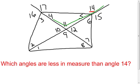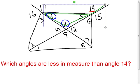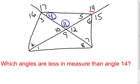I'm going to look at angle 14 as an exterior angle of a triangle — I've highlighted that triangle. I'm going to look for remote interior angles of angle 14, because those are going to have to be smaller in measure than the exterior angle. Angle 11 is a remote interior angle, so it has to be smaller than angle 14. Angle 4 is also a remote interior angle of exterior angle 14, so that one has to be smaller too. So far I've found two angles.